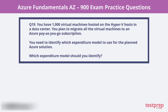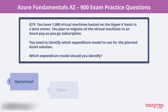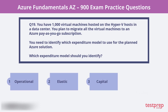Question 19. You have 1000 virtual machines hosted on the Hyper-V hosts in a data center. You plan to migrate all the virtual machines to an Azure Pay-as-you-go subscription. You need to identify which expenditure model to use for the planned Azure solution. Which expenditure model should you identify? Operational model, elastic model, capital model, or scalable model? The correct choice is operational model.